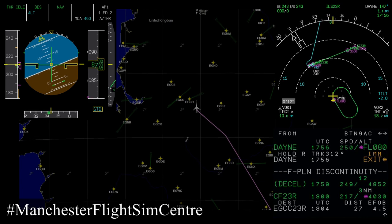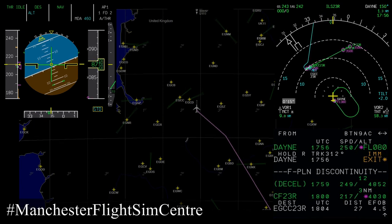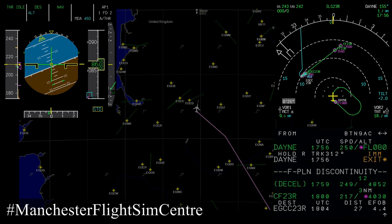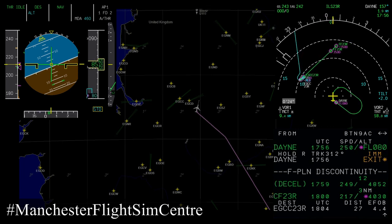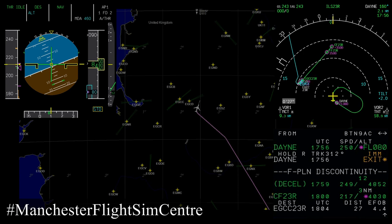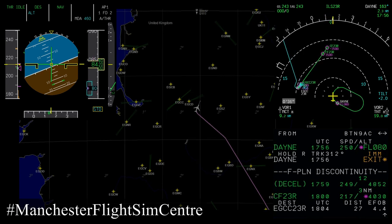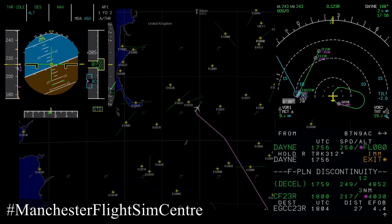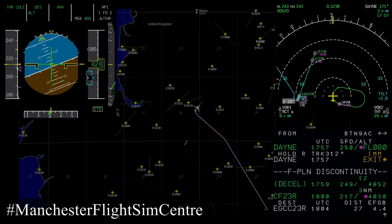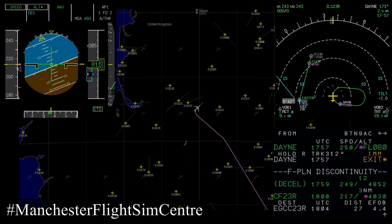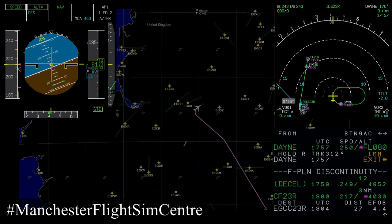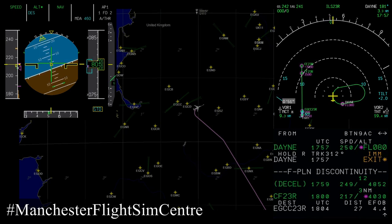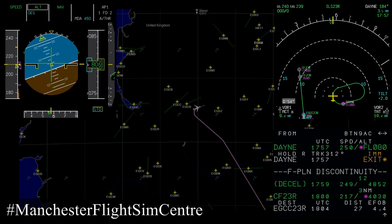Prior to entering the hold and within the hold, we will be considering our options. We'll be considering weather conditions at destination and destination alternate airports. We'll also be considering whether there will be any further delays should we decide to make a diversion. But the most important consideration is fuel on board and how much time we have in the hold before we make a decision. The FMGC can help us with this, and that will be discussed in a more detailed video. Air traffic control may provide guidance on how long we can anticipate being in the holding pattern — they may provide an expected approach time (EAT), or advise a certain number of holding patterns before we can expect to continue.